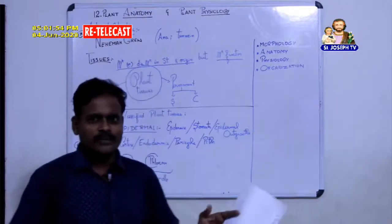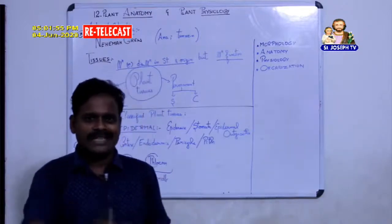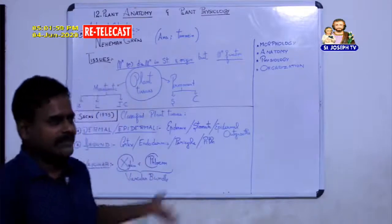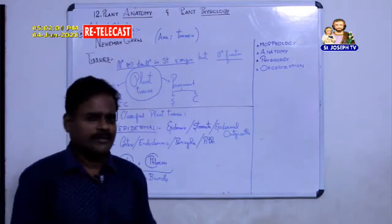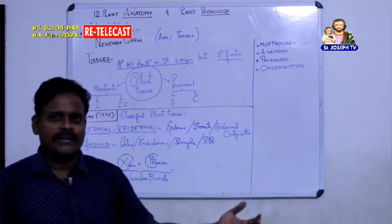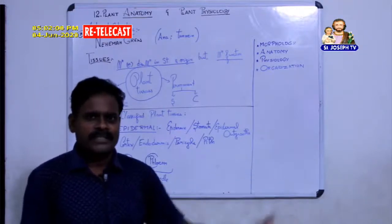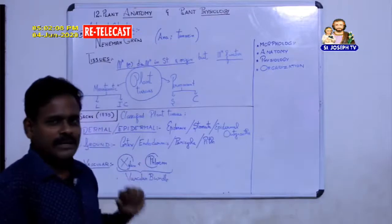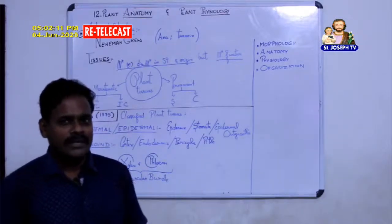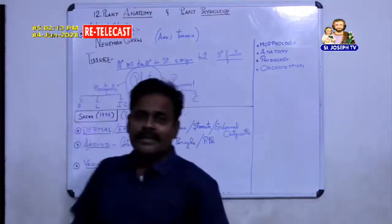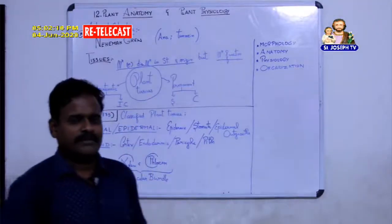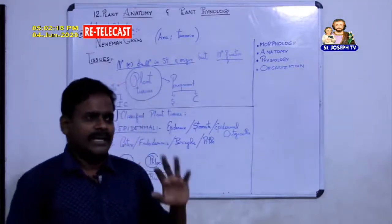You have physics, chemistry, botany and zoology put together called science — it's just one subject, one book, but classified into those four areas. Some teachers would have taken physics, some chemistry, some zoology. I am here to take the first botany lesson, that is the 12th lesson: Plant Anatomy and Plant Physiology.